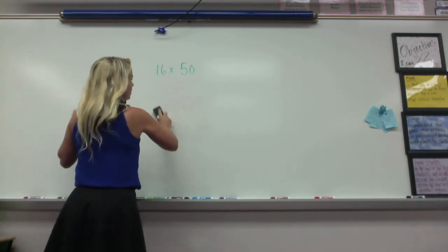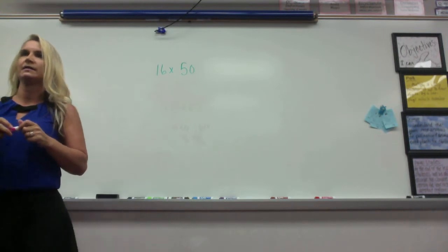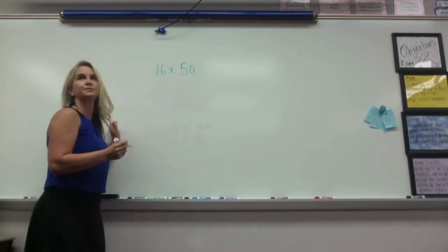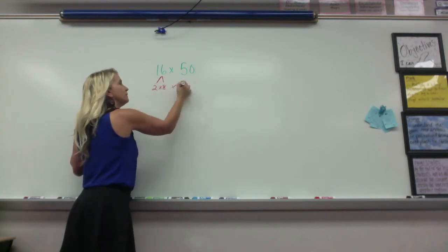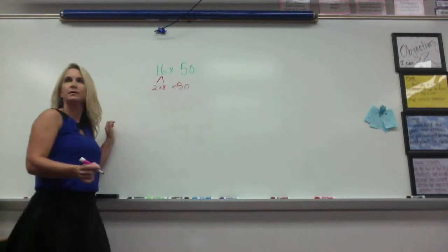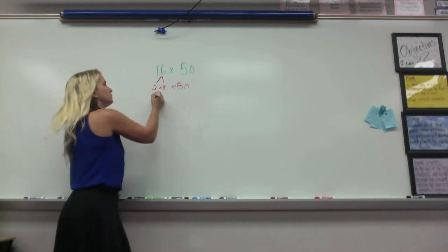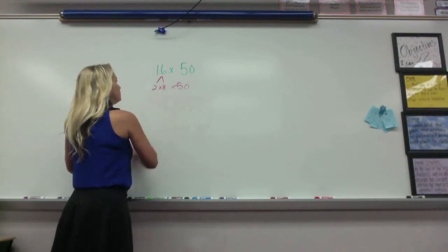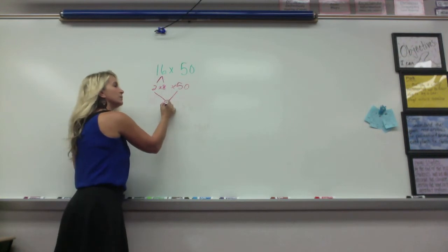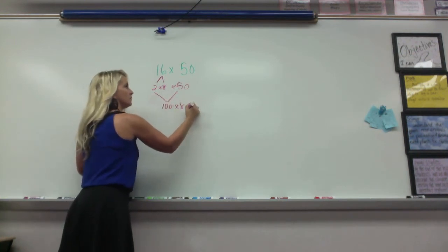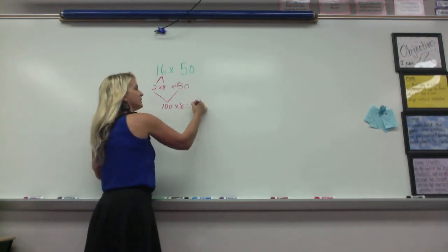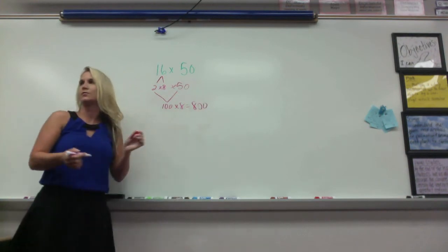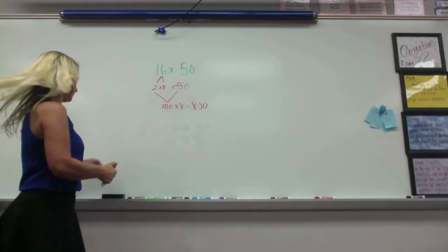And which is one of our strategies that we can use. What's another one that we did? Devin, what did you do? I put 16 to 2 times 8, and then 2 times 50. 2 times 50 equals 100. So 8 times 100 equals 800. How many groups did it this way? Just that group.